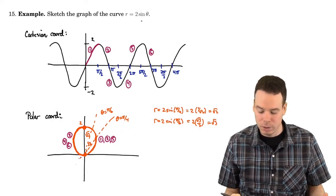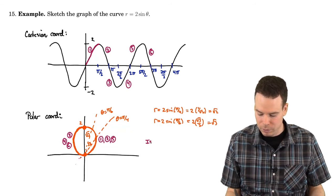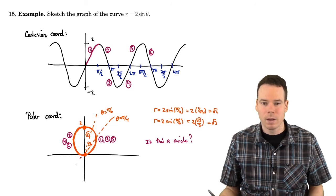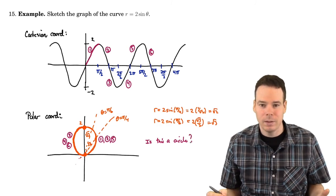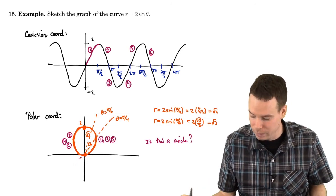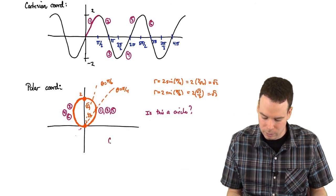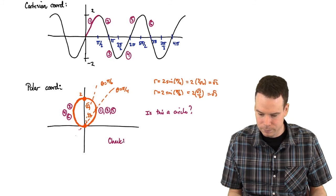So here's my question. Is this a circle? Can we actually show that this is a circle? Well, let's check. Let's check to see if it's a circle. How do we check that?